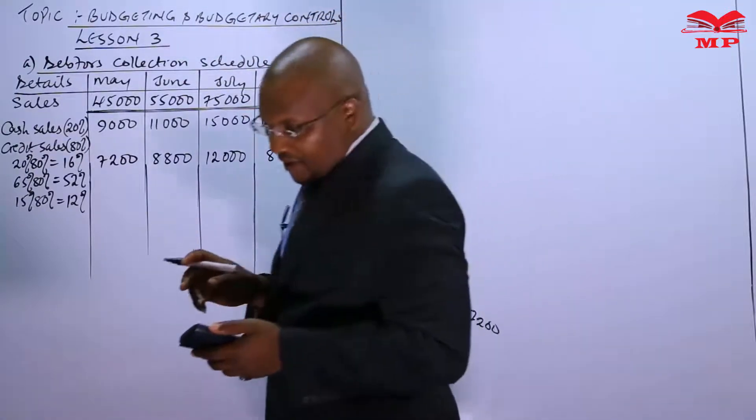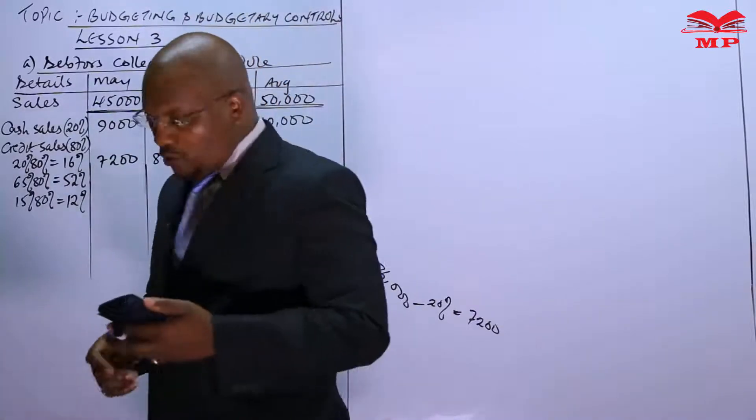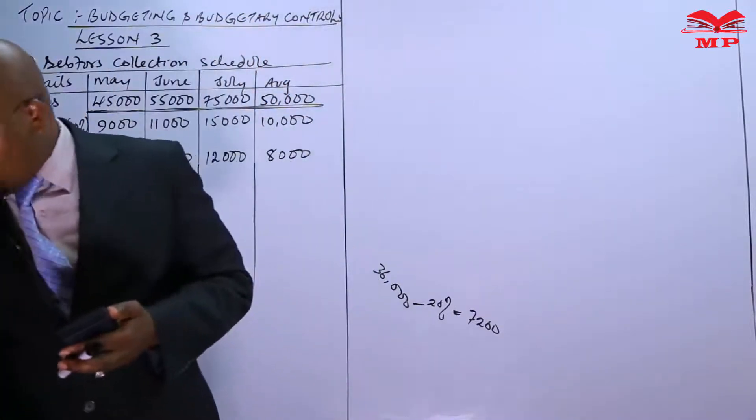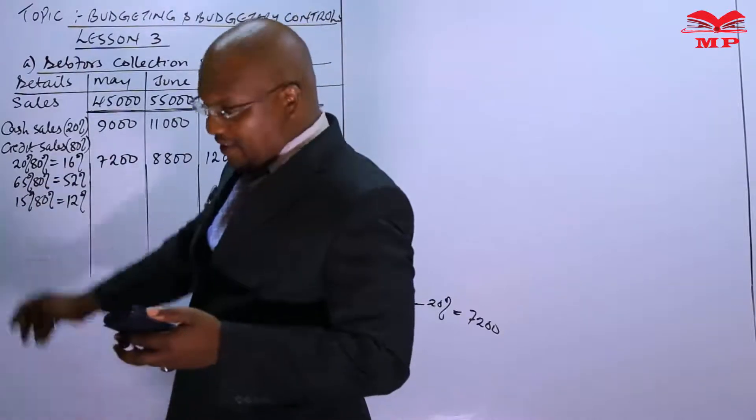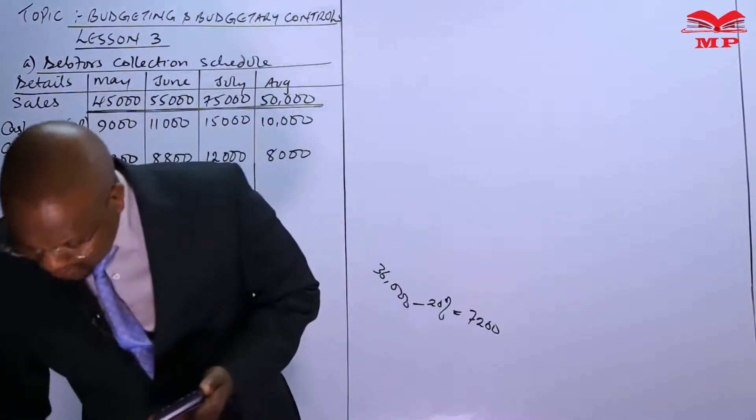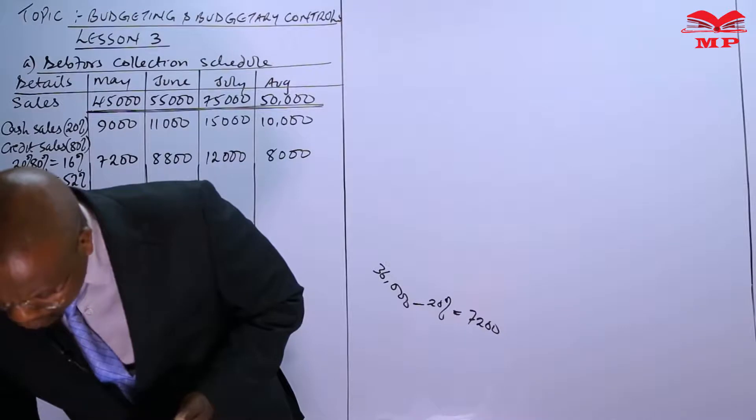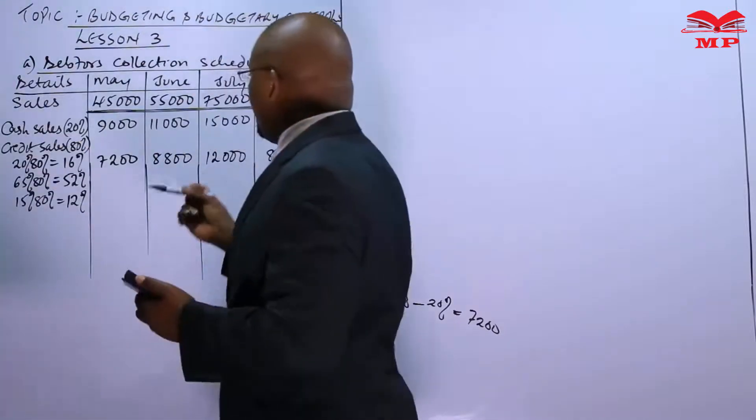Then we are told that the bit of the 50,000 total sales, 52%, which is now these are 65%, we have been told that this is to be collected the following month, so the following month after sale.